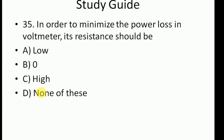Question 35: In order to minimize the power loss in a voltmeter, its resistance should be? The ideal case is zero, but practical case is not low or zero. The answer will be high. A voltmeter should have very high resistance when connected in parallel. High resistance reduces loading effect and power loss.